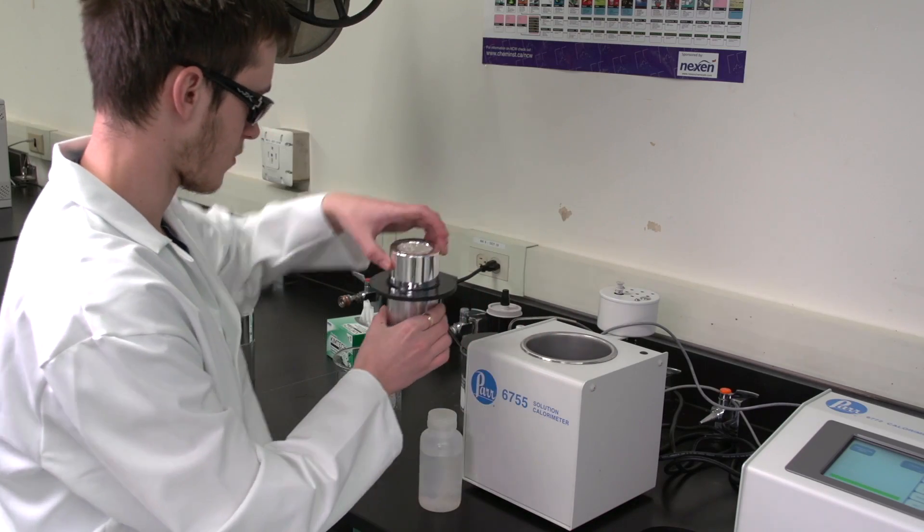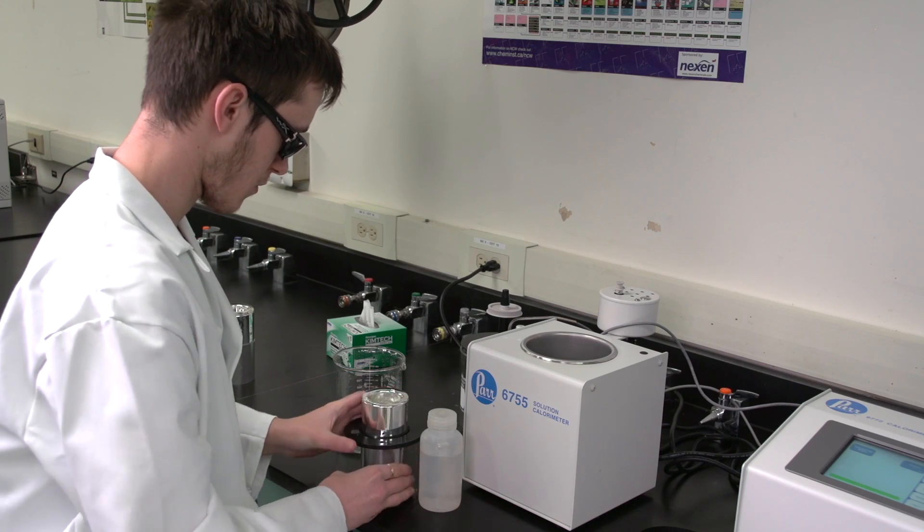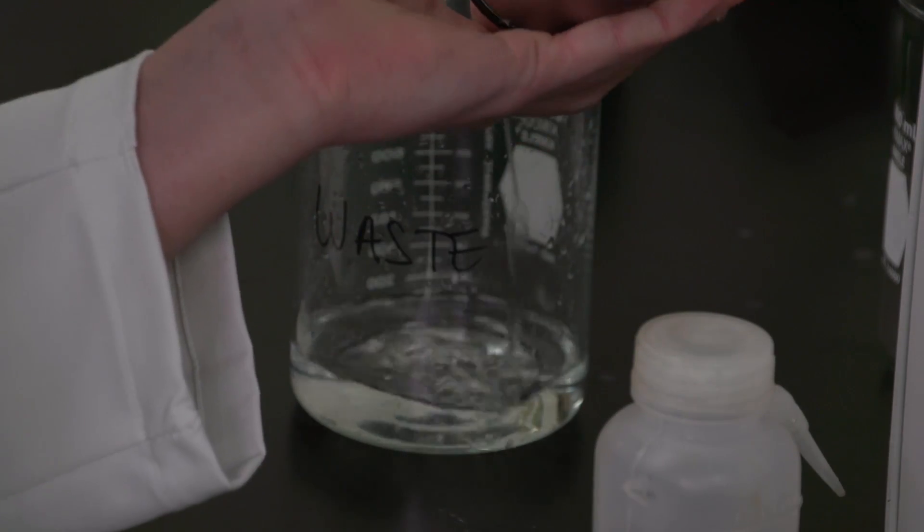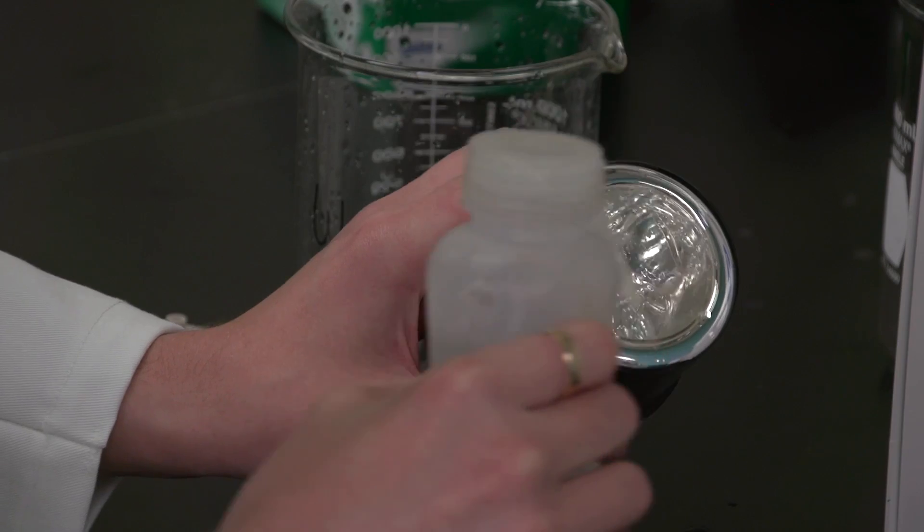Remove the Dewar flask and the centering ring from the calorimeter. Separate the centering ring, discard the contents of the Dewar flask, rinse and dry.